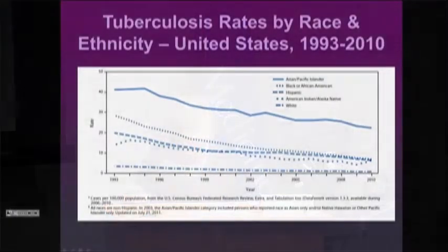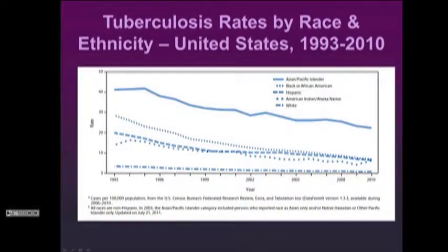There are other diseases where the racial and ethnic groups carrying the excess burden differ from what you might expect. One example is tuberculosis. We've done a lot to reduce TB rates, as shown by the decrease on this graph, but it's actually Asian and Pacific Islanders who have by far the highest rates. Even though their rates are declining along with other groups, there's still an enormous gap. So the question is: why do these differences exist, and what can we do about it?